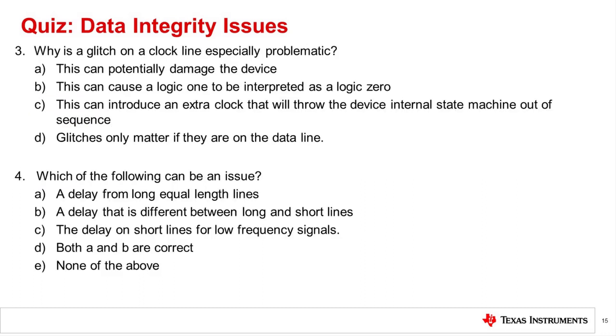Question 3. Why is a glitch on the clock line especially problematic? The correct answer is C. This will introduce an extra clock that will throw the device internal state machine out of sequence. A glitch on the clock line is effectively an extra clock. This kind of problem will often have the effect of shifting data to the left. This can sometimes put the device into an undefined state requiring a reset.